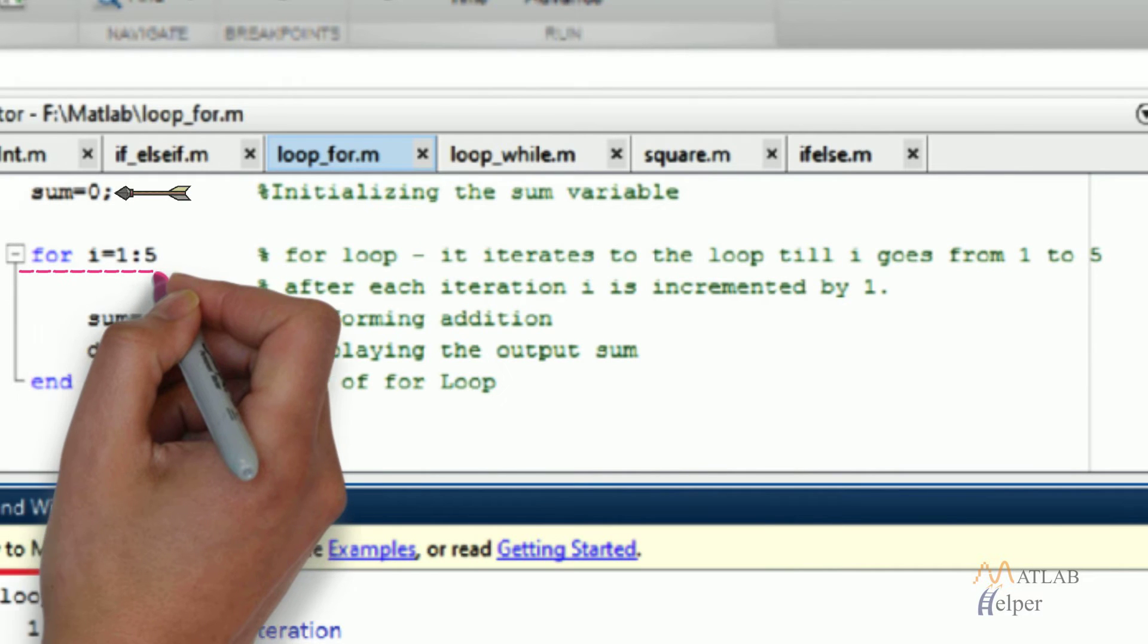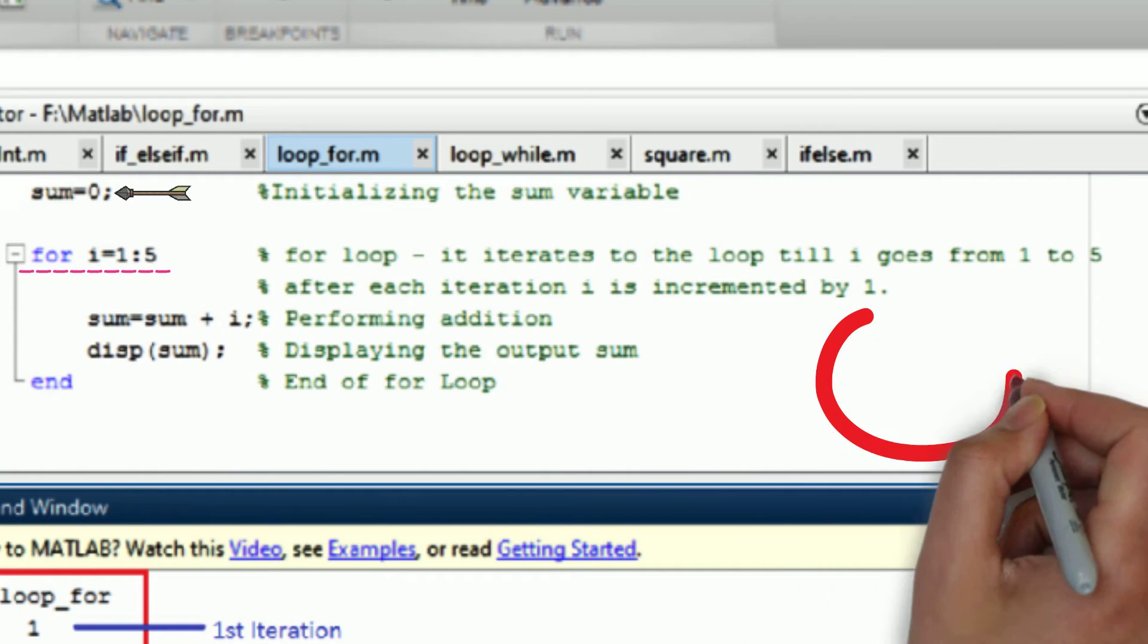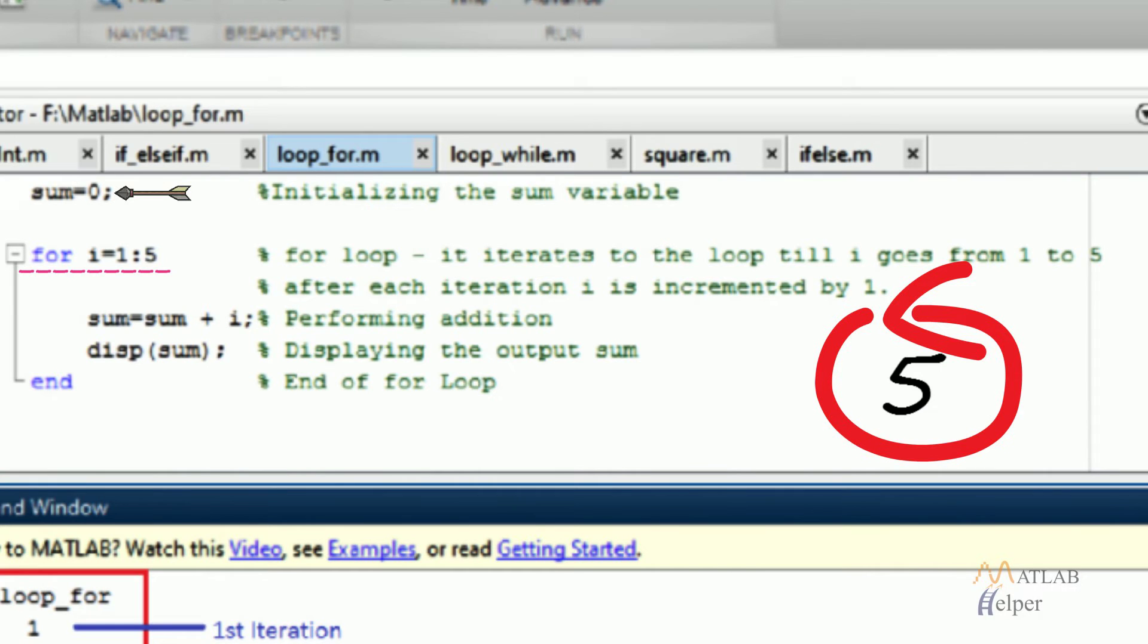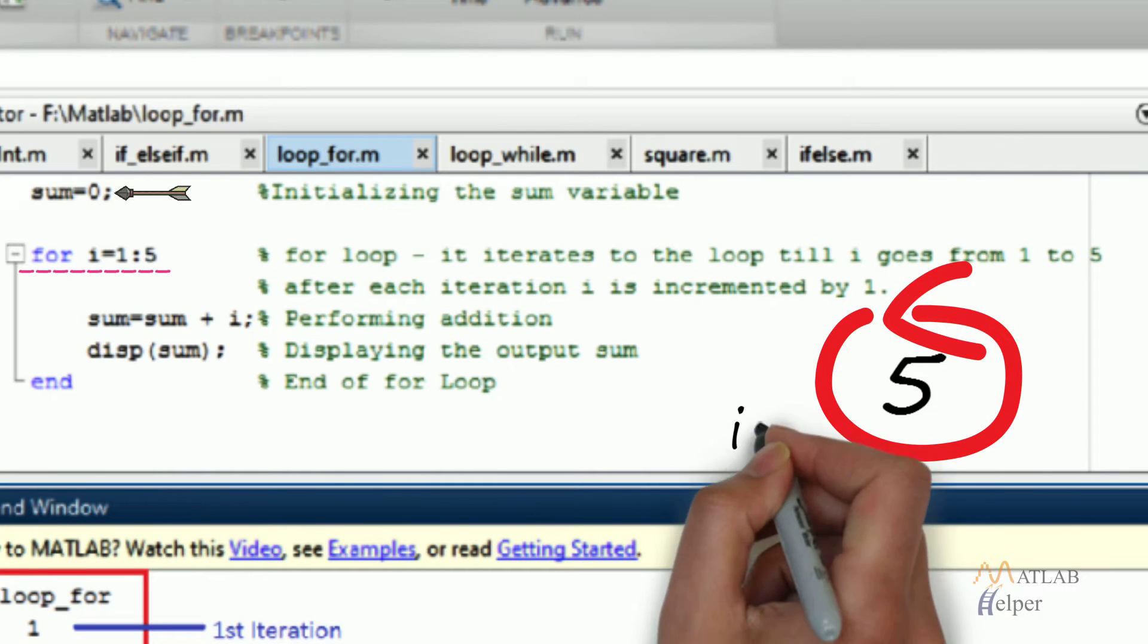For i=1:5 means that it has to execute the statement within the loop 5 times. And after each iteration the value of i is incremented by 1.